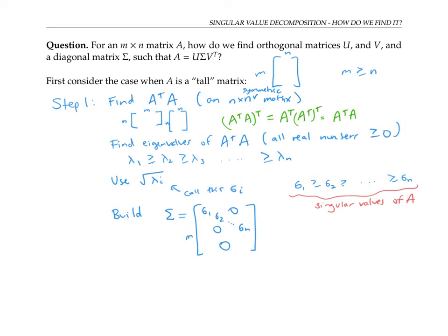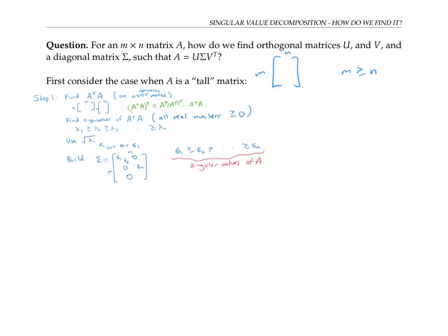It makes sense to use the square root of lambda i instead of lambda i because lambda i is the eigenvalue for the product A transpose A, which is kind of like doing A squared. So the square root of lambda i is more related to just A itself. So now we've got sigma, the middle matrix of the three. Next, let's work on V.